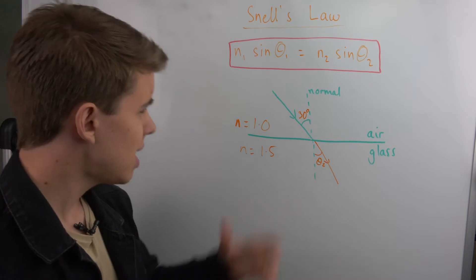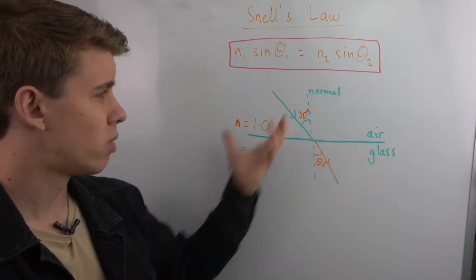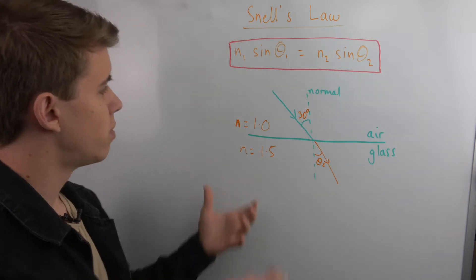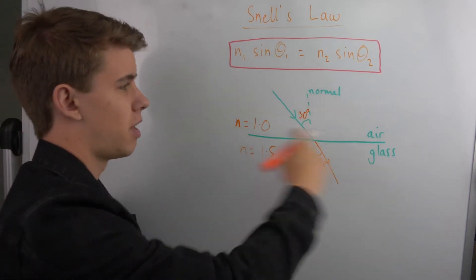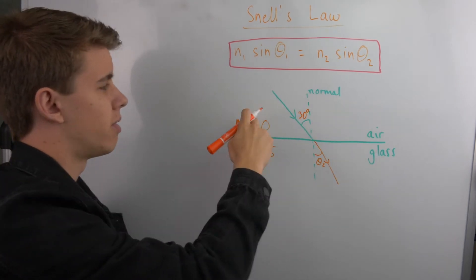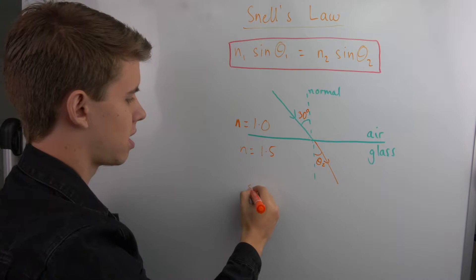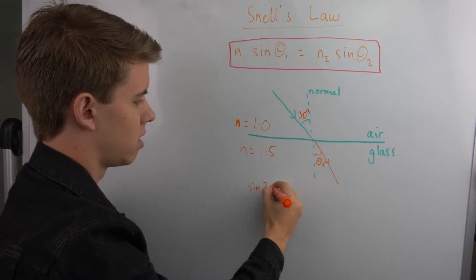So your light turns and so this angle here will be something theta 2 that will be smaller than 30 degrees. Then all we have to do is take all of these values. They could ask you then to calculate the value of theta 2. We then just substitute in. We know n₁ because our first medium is air.